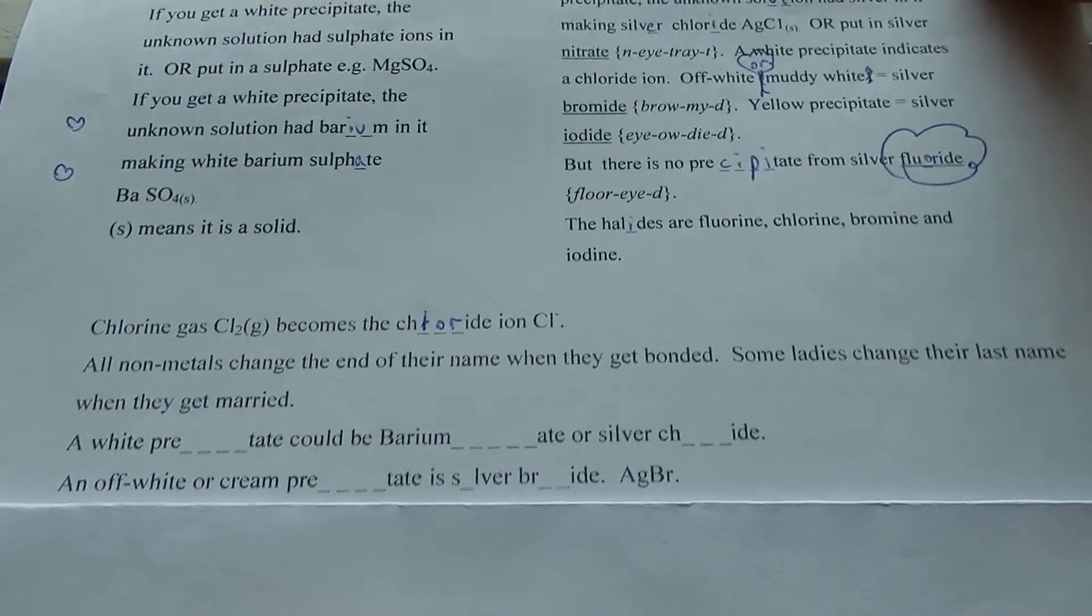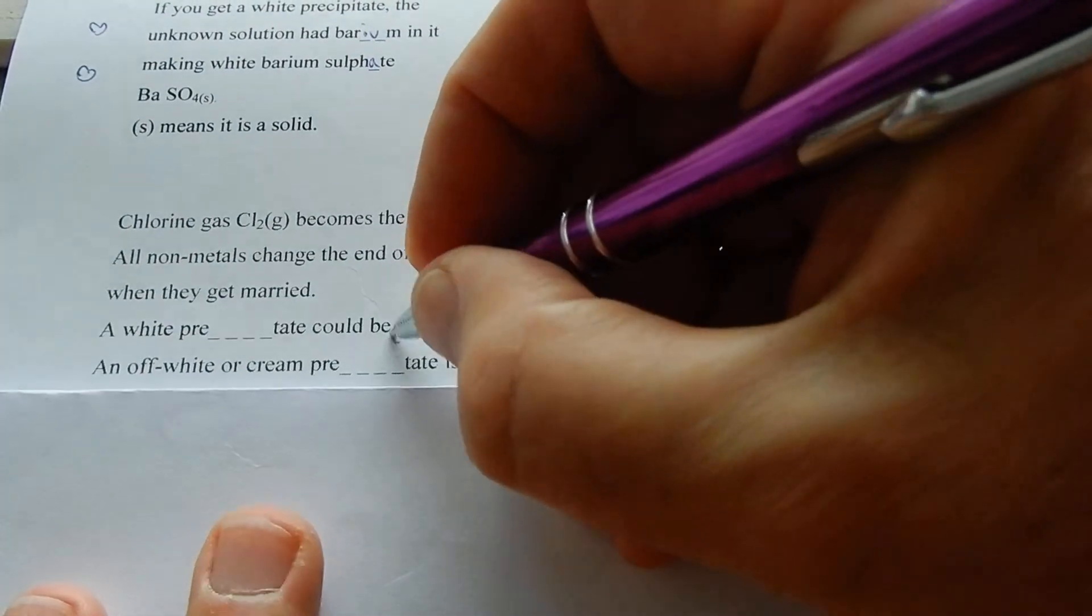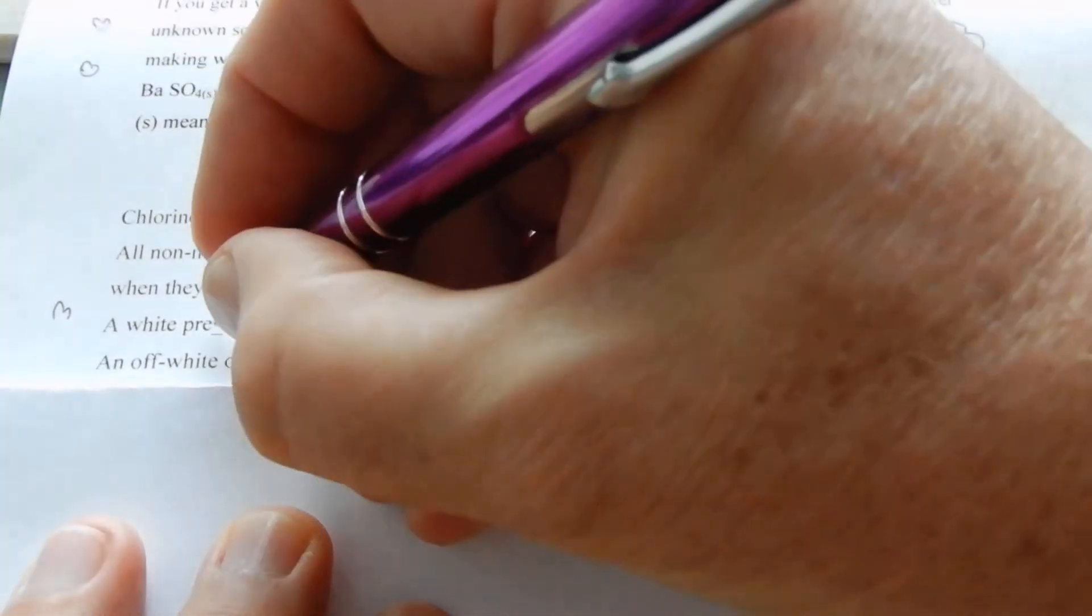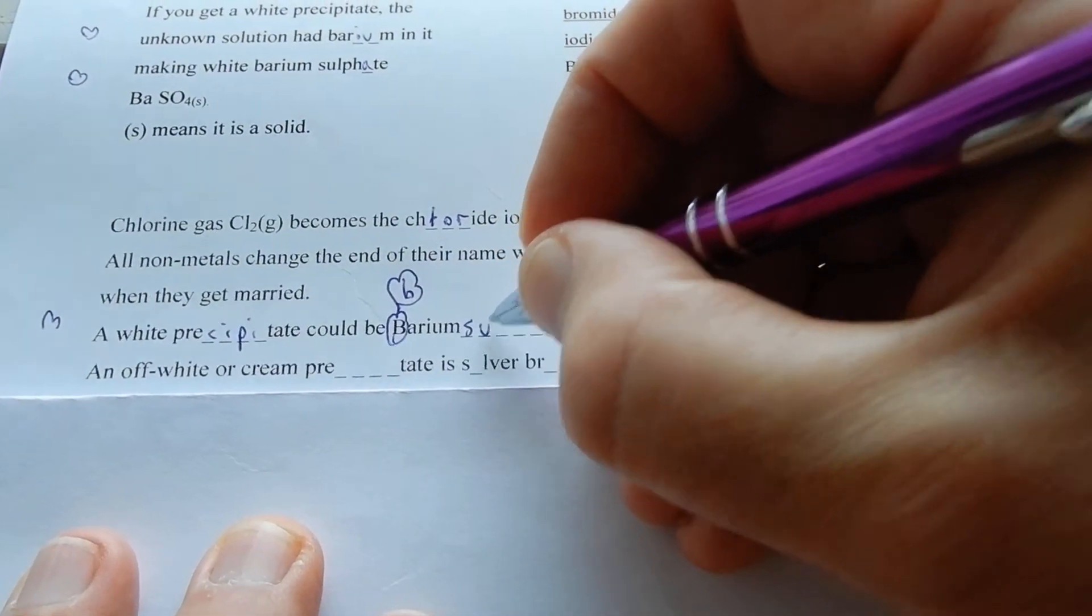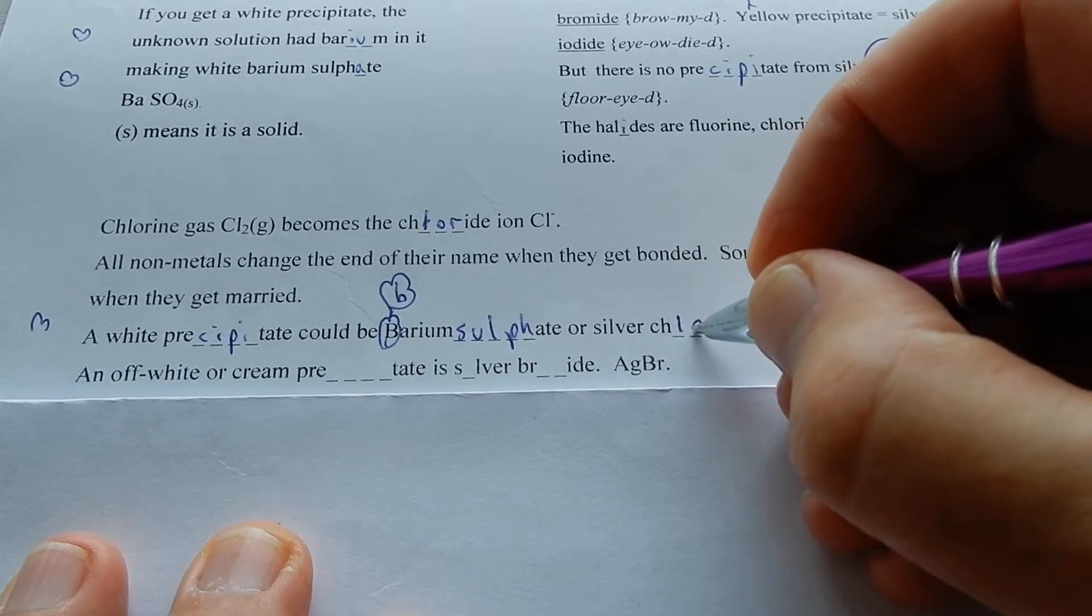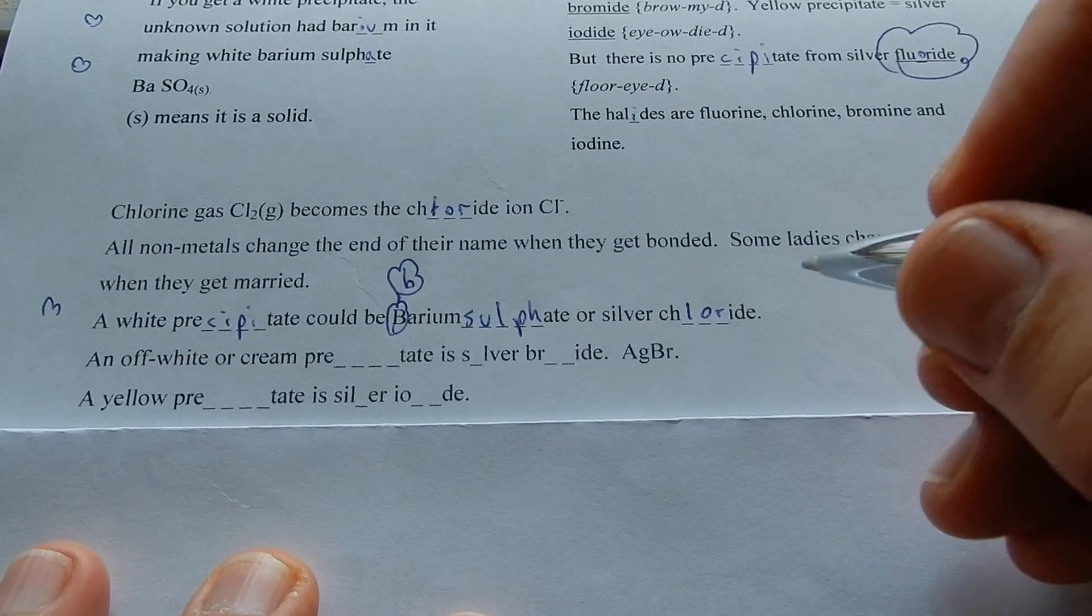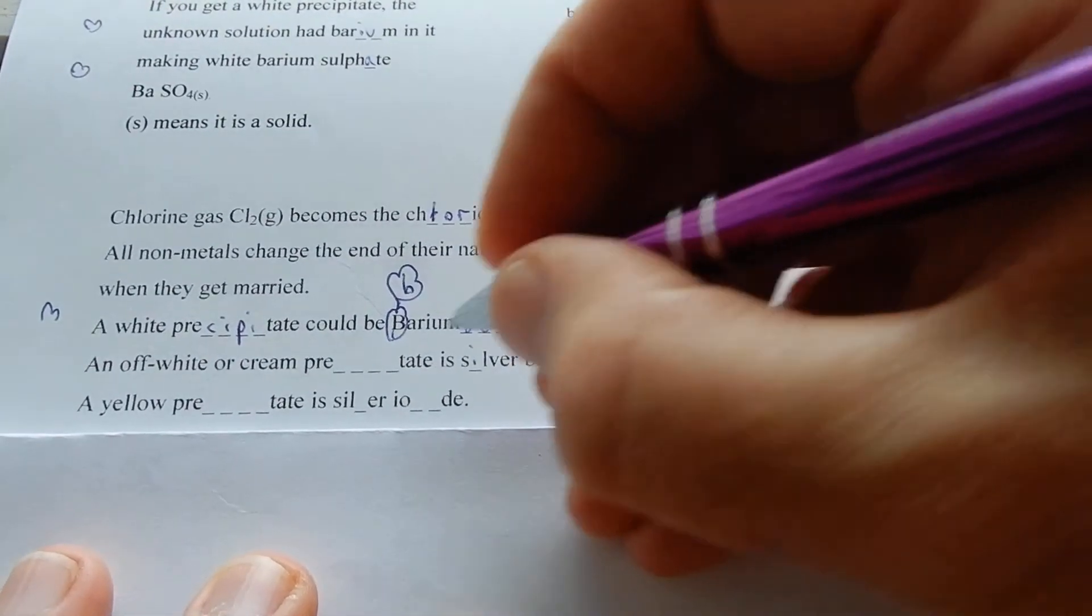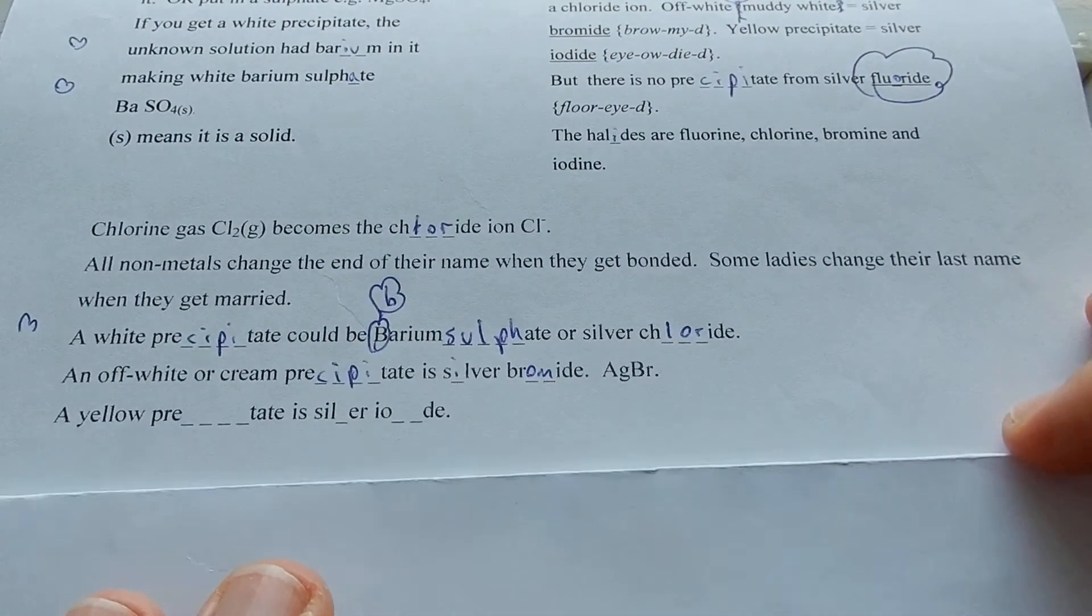A white precipitate could be barium sulfate or silver chloride. An off-white or cream precipitate is silver bromide, AgBr. A yellow precipitate is silver iodide.